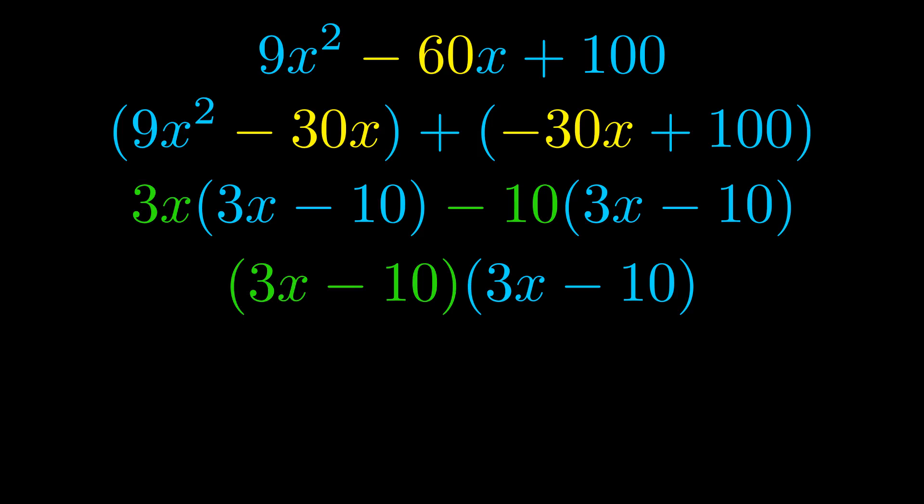Those blue values will become one of our factors and we will combine the two green values, the GCFs that we pulled out, to get the other one. And that is our fully factored equation.